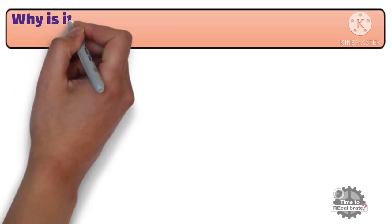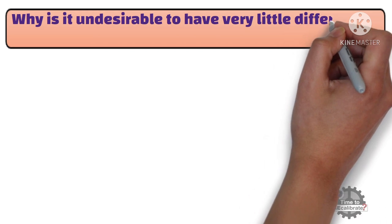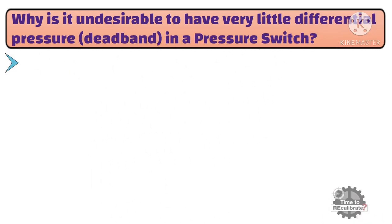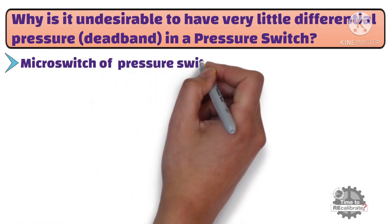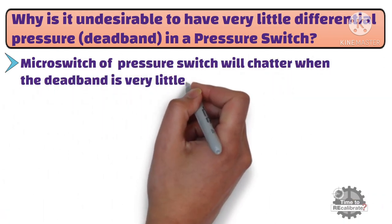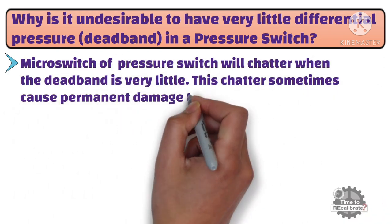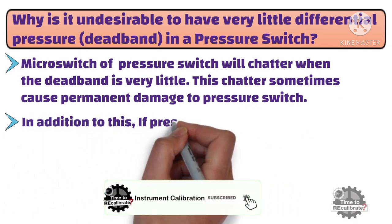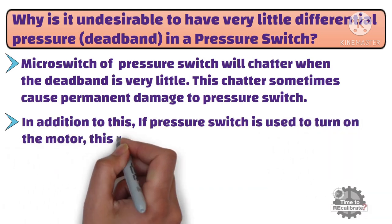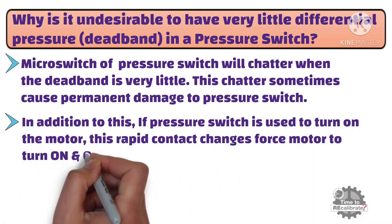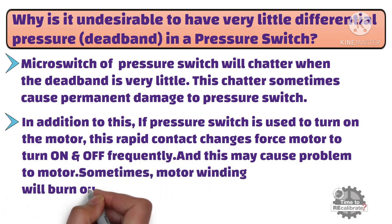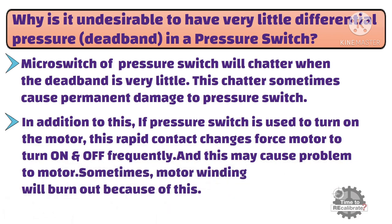Now, why is it undesirable to have very little differential pressure or dead band in a pressure switch? The microswitch of the pressure switch will chatter when the dead band is very small, and this chatter can sometimes cause permanent damage to the pressure switch. In addition, if the pressure switch is used to turn on a motor, these rapid contact changes force the motor to turn on and off frequently, which may cause problems — sometimes the motor winding will burn out because of this.